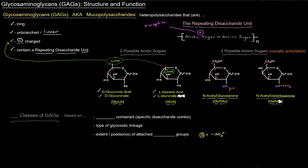Now there are six classes of glycosaminoglycans and they're classified based on a few different things.